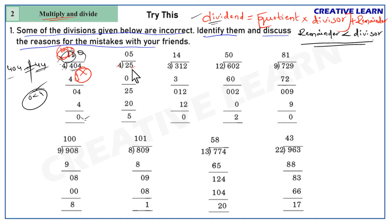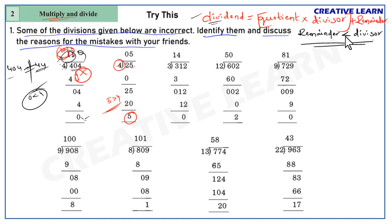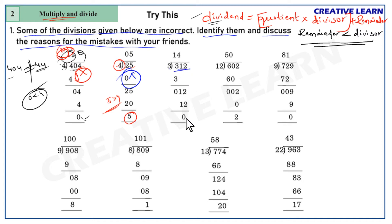Next, second problem: 25 divided by 4. Checking the second rule — remainder is 5 and divisor is 4. Since 5 is greater than 4, the rule that remainder must be less than divisor is not satisfied. So this is the incorrect division.